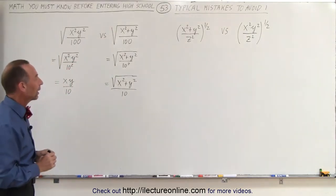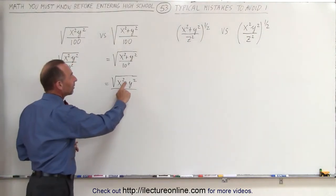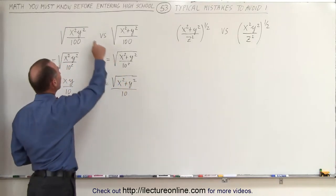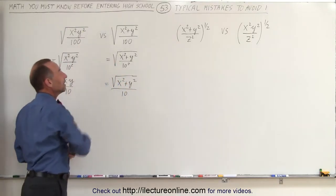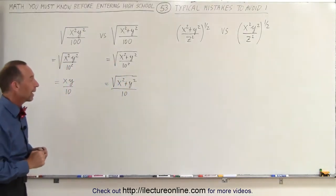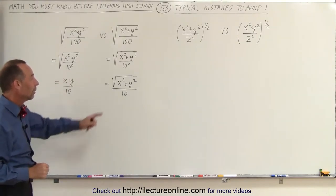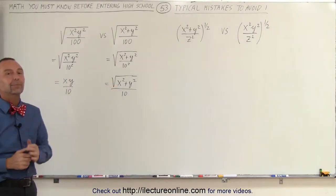This is how you have to leave it — that's as simple as you can write it. If the plus wasn't there and there was a multiplication sign, then it would look like the left example, and you can indeed take out the x squared and the y squared from the radical and write it as x times y. But if it's addition, it cannot be done.